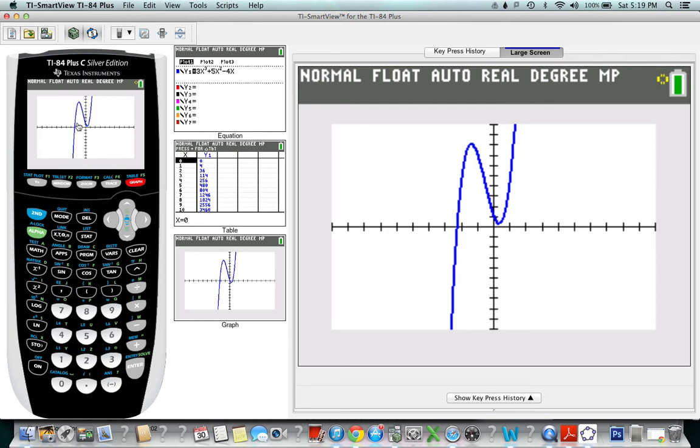Now I know I want the tangent when x is negative 2. So it's a line that is touching there and going something like that.